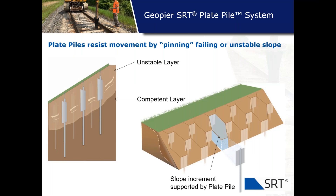The basic concept of slope reinforcement technology is to divide the sliding mass into smaller increments and use each SRT plate pile to resist the lateral movement of each soil increment. This is done by driving the plate pile through the unstable moving zone of soils and bearing it into the non-moving or stronger competent layer underlying it. The design results in a required spacing that breaks the slide into smaller components that can be resisted by the lateral shear capacity of each designed plate pile. Transverse spacing up and down the slope is a function of analysis, while horizontal spacing is almost always a function of soil arching in fine-grain soils.